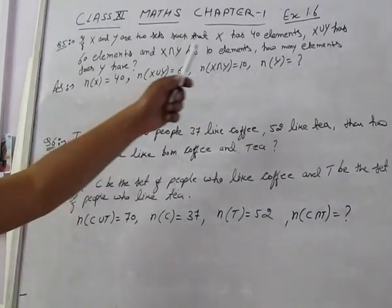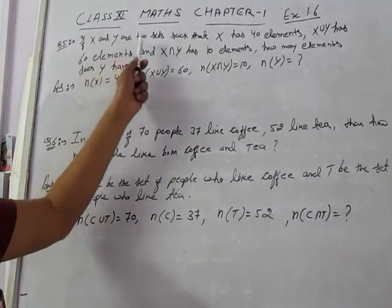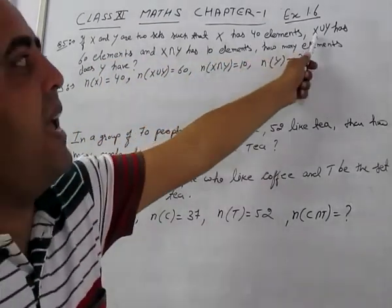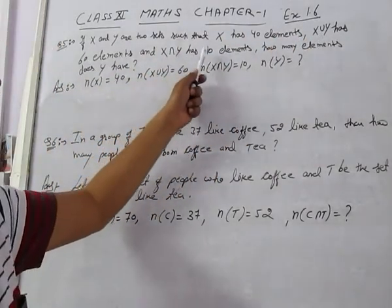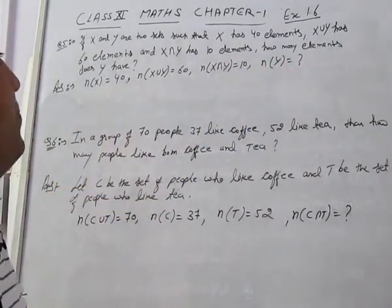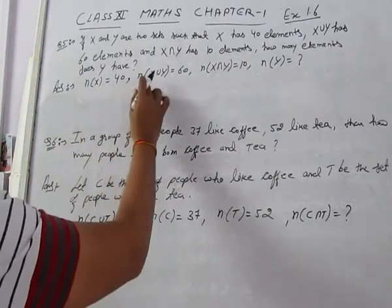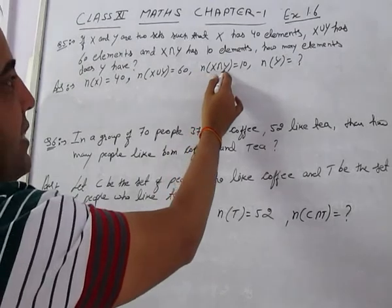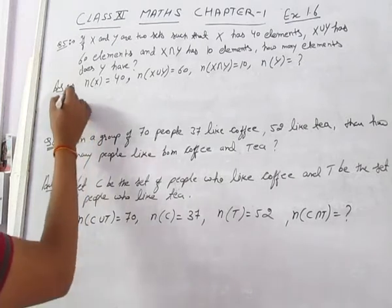Exercise 1.6, question number 5. If X and Y are two sets such that X has 40 elements, X union Y has 60 elements, and X intersection Y has 10 elements, how many elements does Y have? Given: n(X) = 40, n(X∪Y) = 60, n(X∩Y) = 10. Find n(Y).